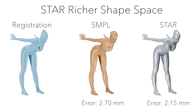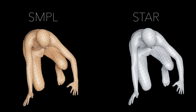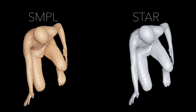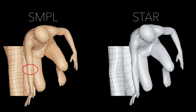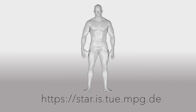STAR has an order of magnitude fewer parameters than the popular SMPL model. This, combined with its sparsity, means that STAR does not suffer from spurious long-range correlations the way SMPL does. Notice the spurious bulge on the right elbow of SMPL when the left elbow bends. STAR is a plug-in replacement for SMPL and is publicly available for research purposes.